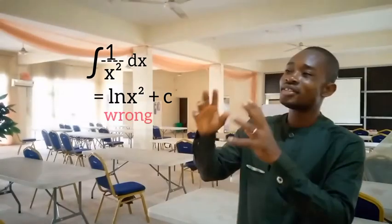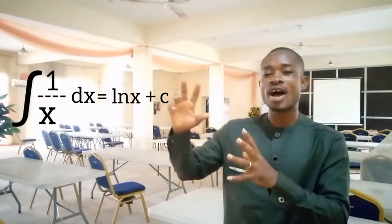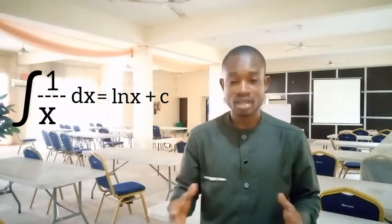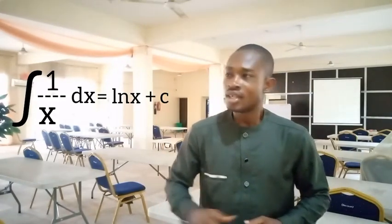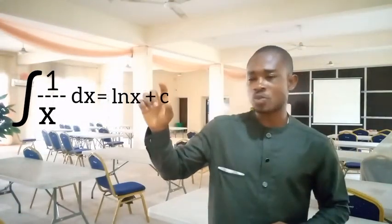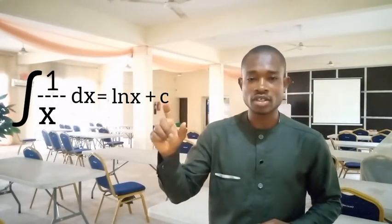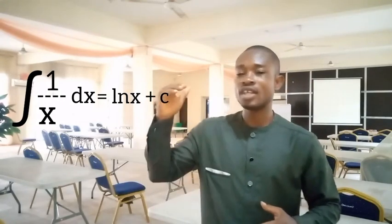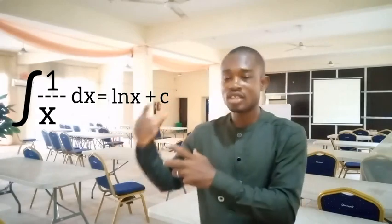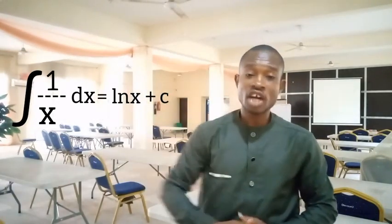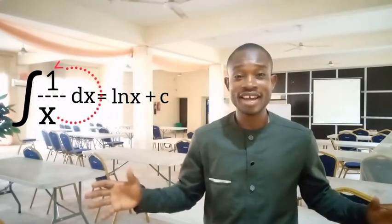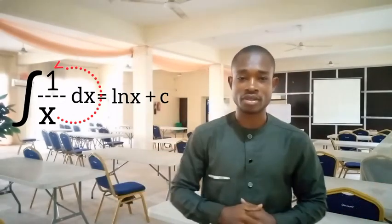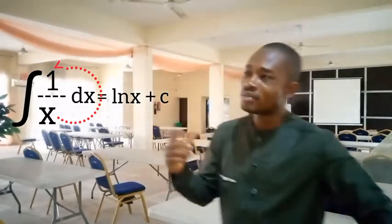The whole idea of integral 1 over x dx producing ln x is this: if you are given such an expression to integrate, check the denominator. Differentiate the denominator — if what you get from differentiating the denominator is the term in the numerator, then we can conclude that such an integral is ln of the denominator.